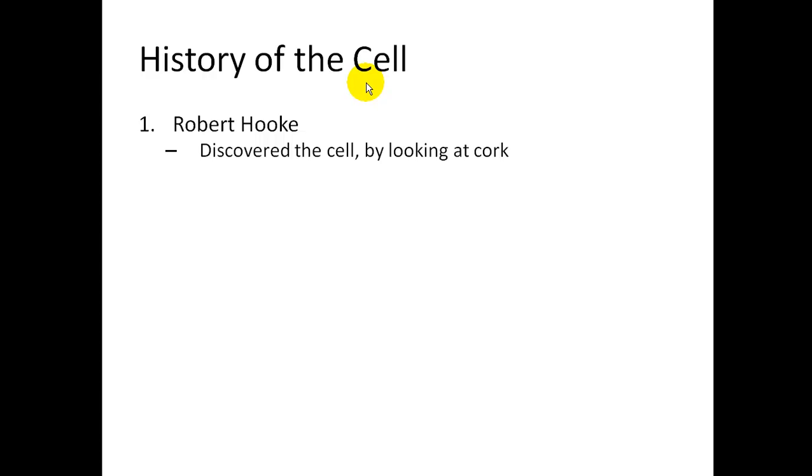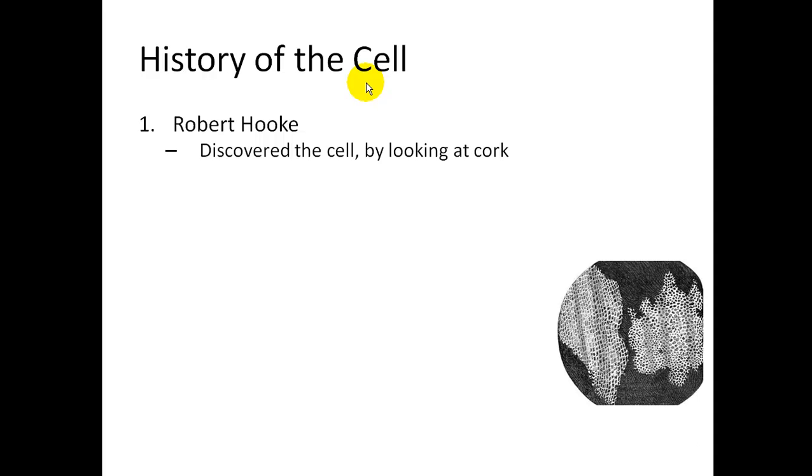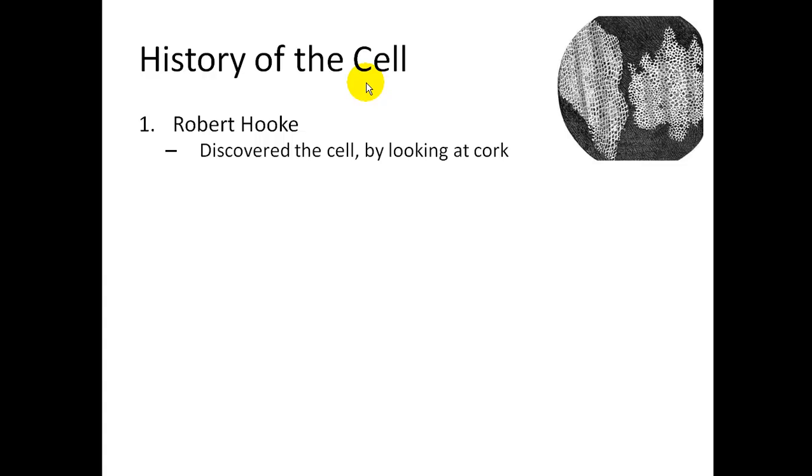The first one is Robert Hooke. He actually came up with the word cell. He was the first one to see the cell under the microscope. He was looking at a plant cell, actually cork of the plant. He saw these little squares and he said those look like my cell because he was a monk and he lived in a monastery and his rooms were really small. And so that's where the word cell came from.